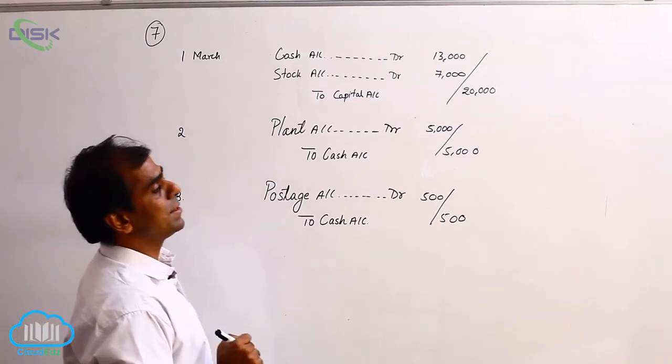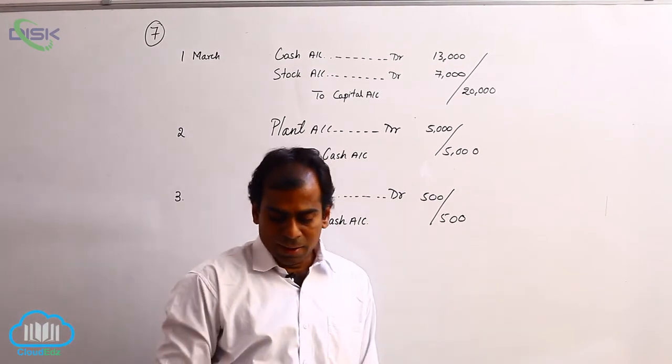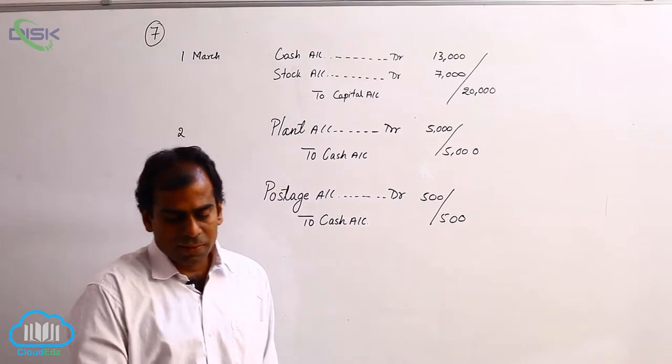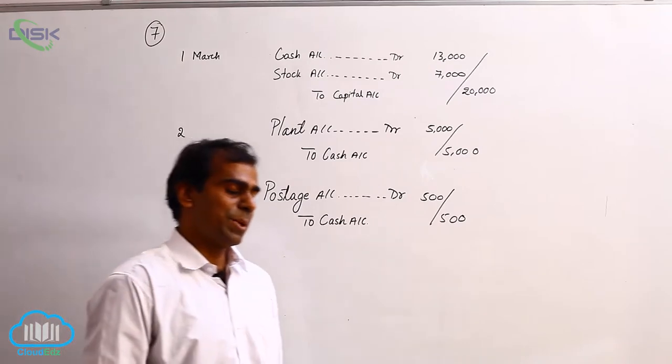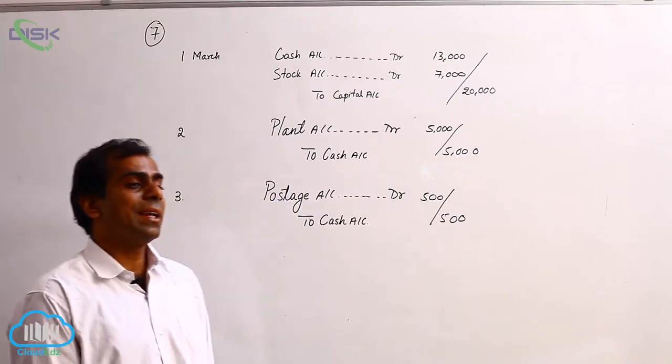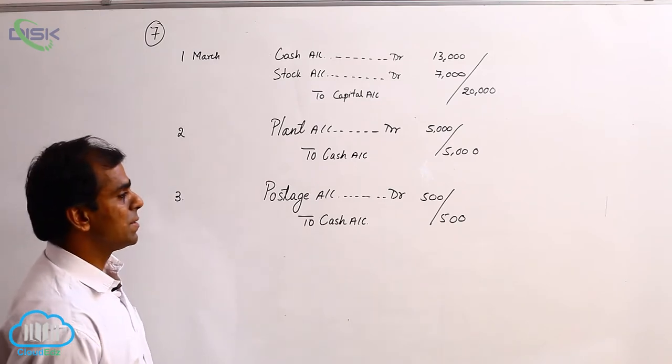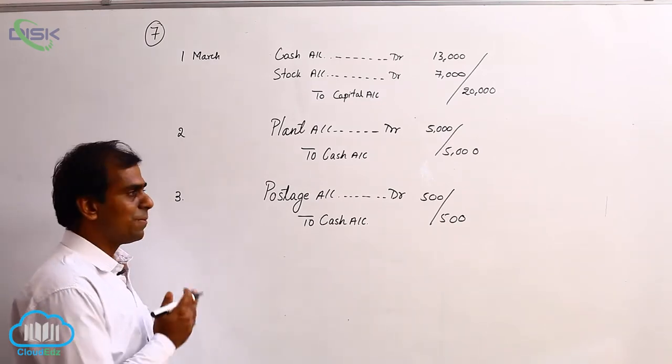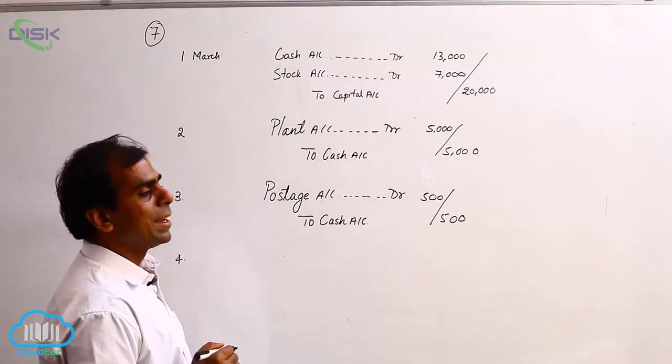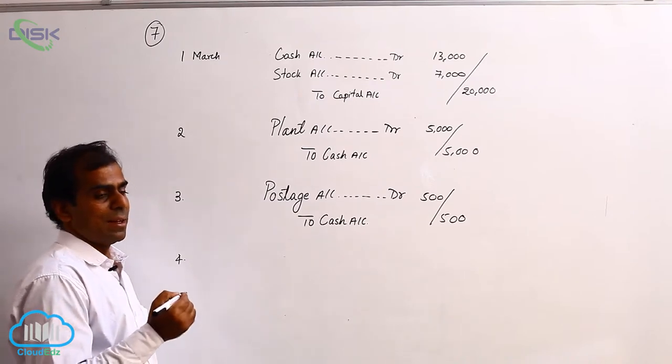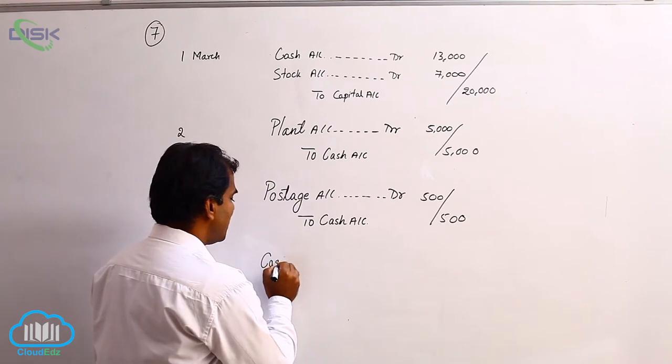Now next transaction is on fourth, which is withdrew cash for office use. The meaning is whatever money previously you have put in, some money you are taking out from the bank for office use. So it is withdrawal of money from bank for office use on fourth. So when you are taking out money from the bank, cash is coming into the business. So cash is real account. The rule is debit what comes in.